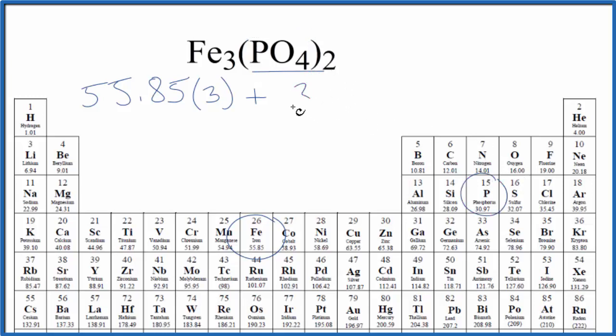Phosphorus on the periodic table is 30.97 grams per mole. We only have one phosphorus in the parentheses, plus oxygen is 16.00 grams per mole, but we have four of these oxygen atoms. So we'll multiply this times four.